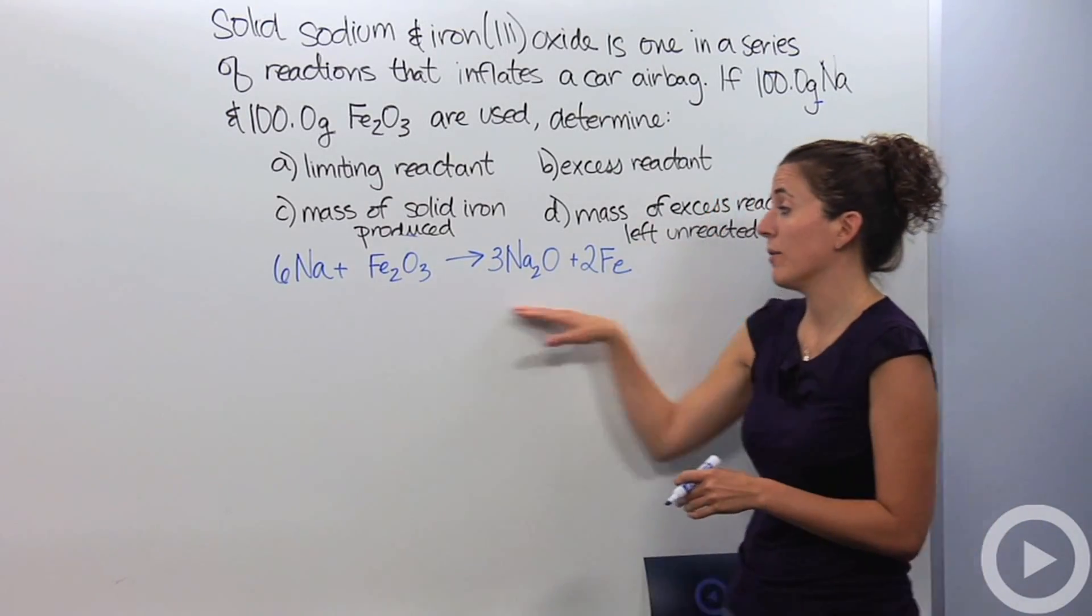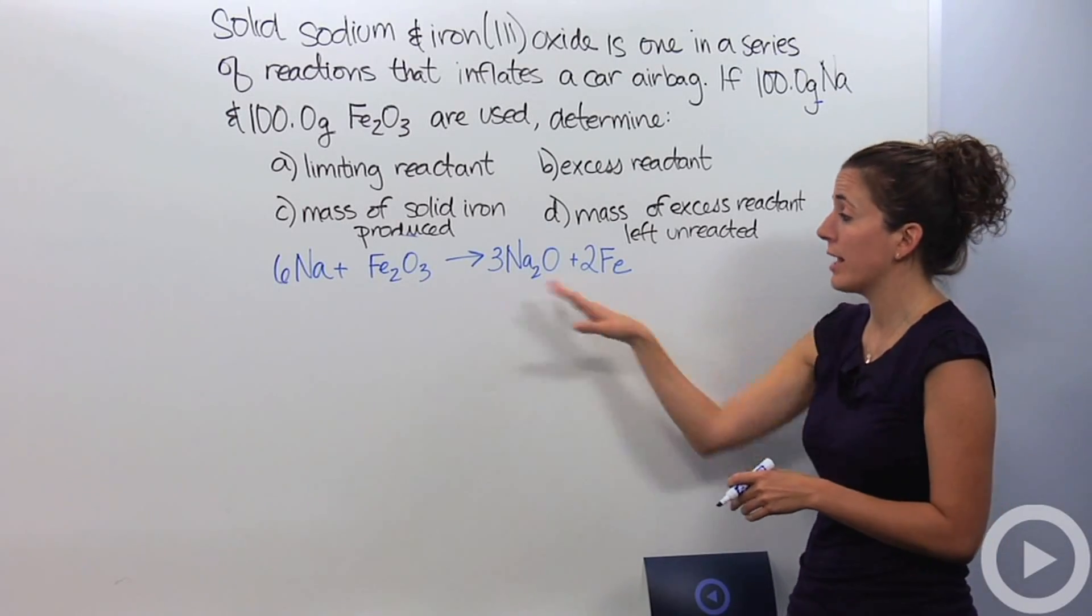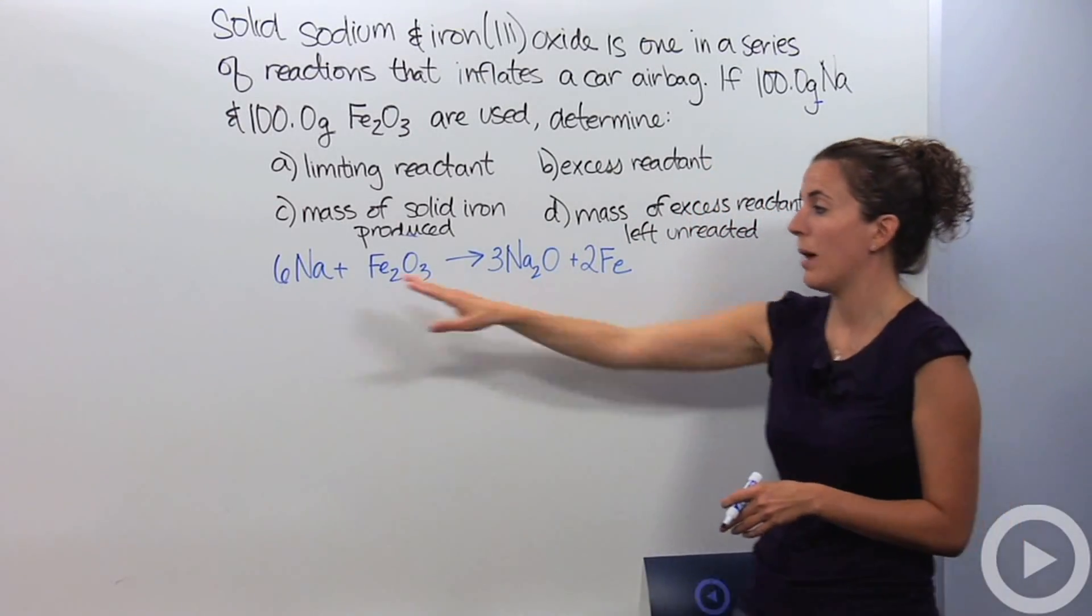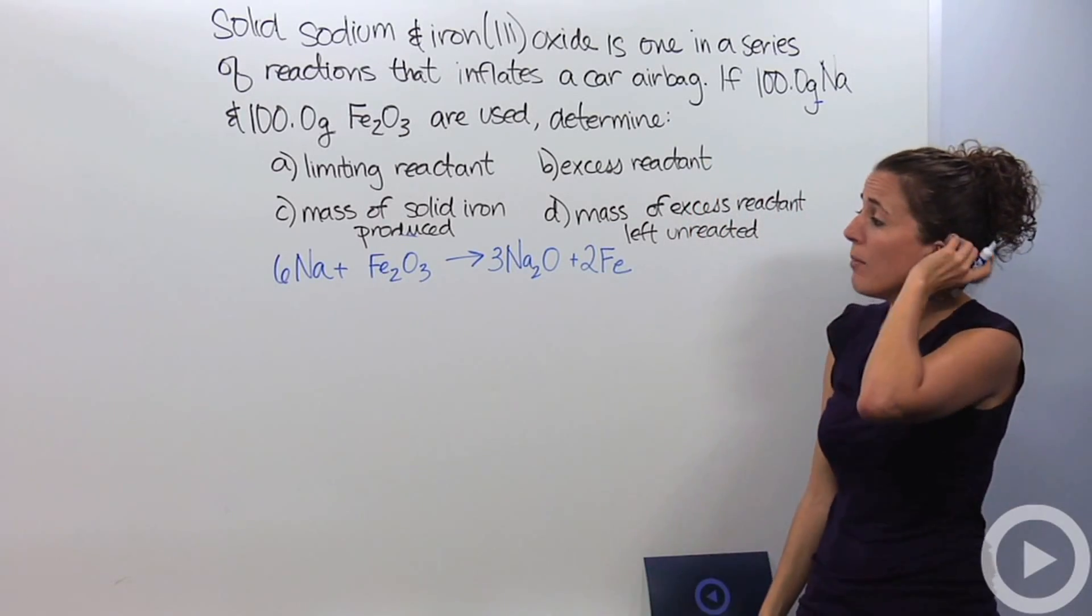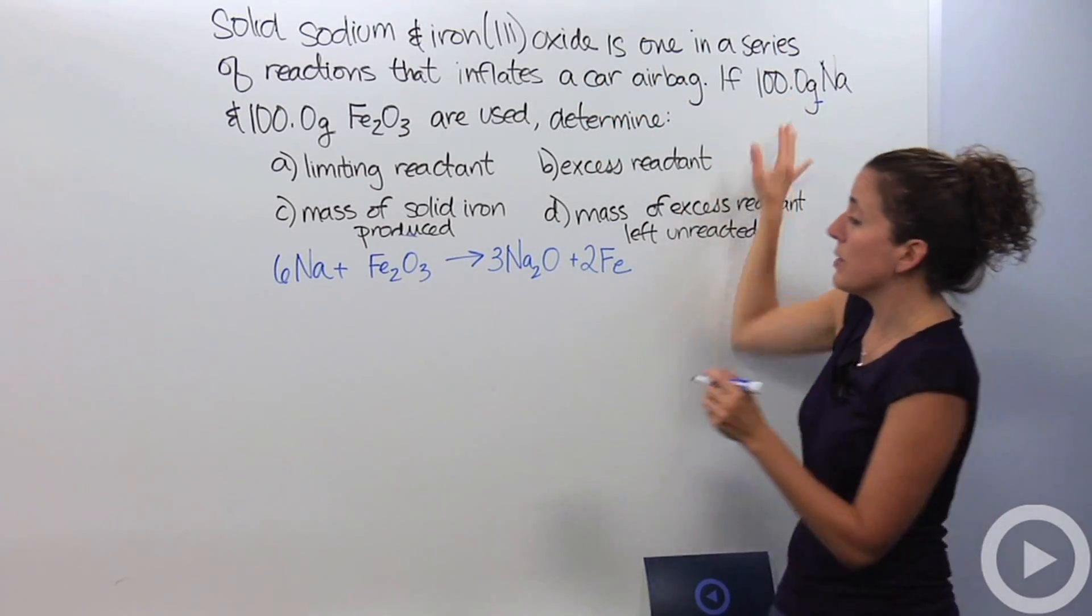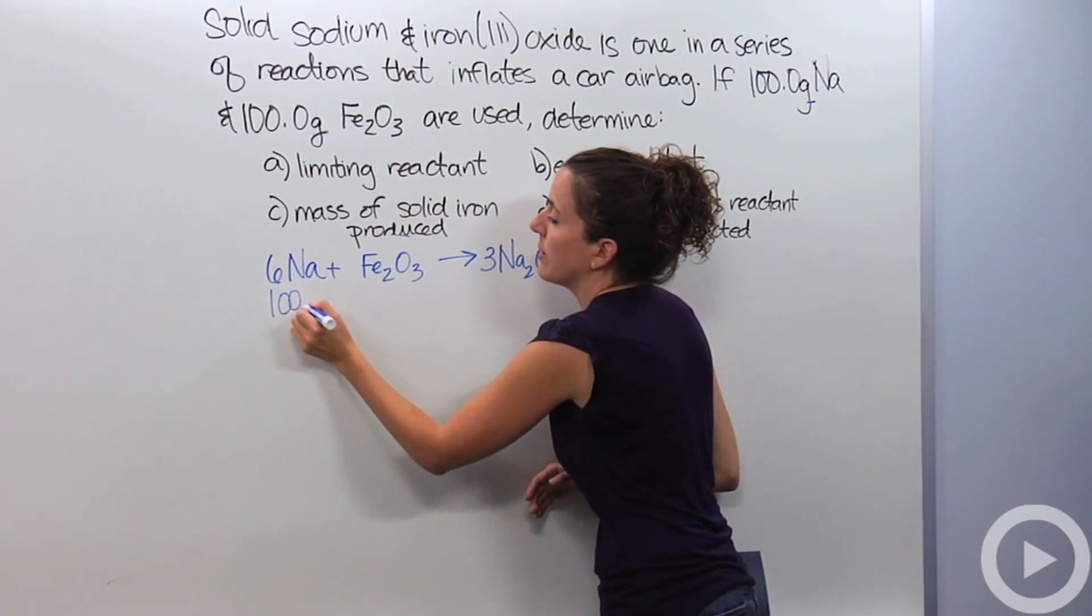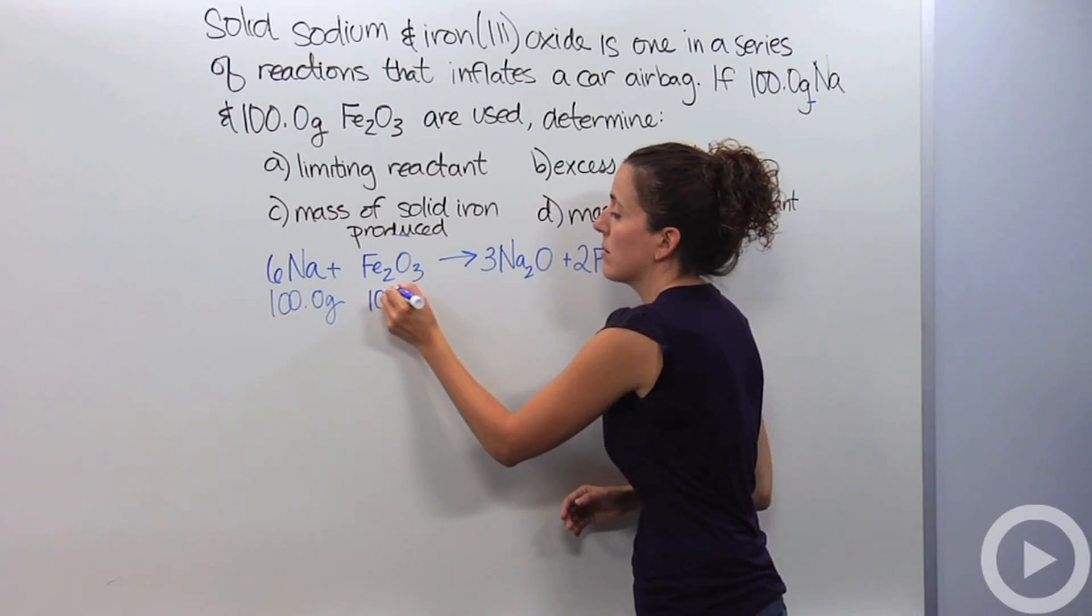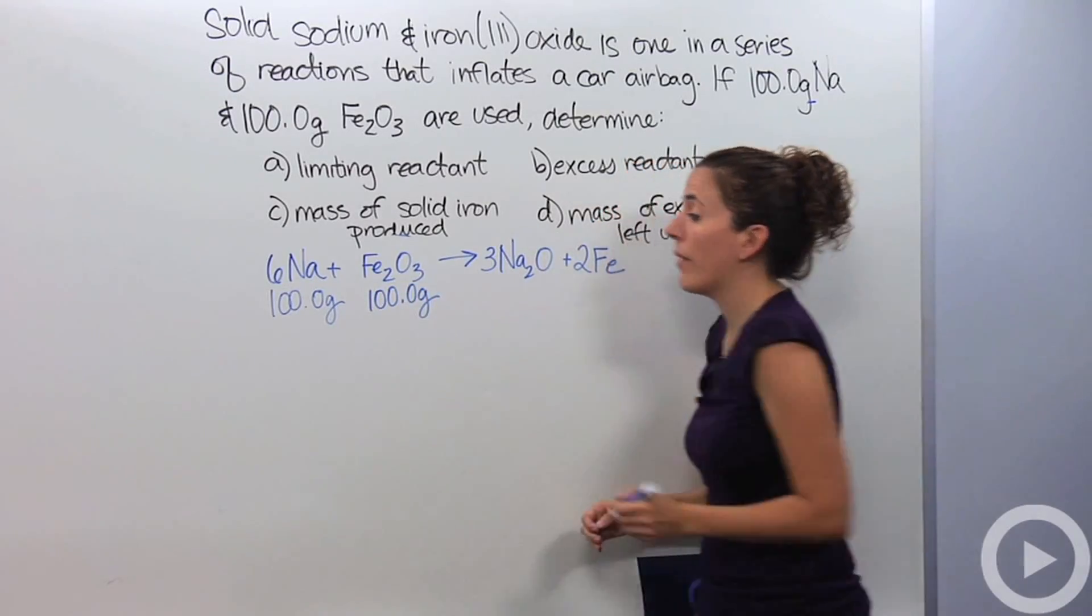I've actually put this reaction on the board for us, balanced, and I gave the products. I know this is a single replacement reaction, so it's easy for me to figure out. I just swapped the metals. And I look at the information I have for my problem, and I know that I have 100 grams of sodium, so I'm going to write that down here to make it easier for me to see. And I'm also given 100 grams of iron three oxide.